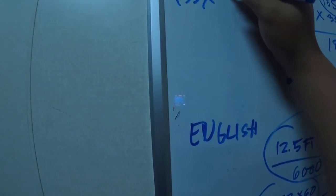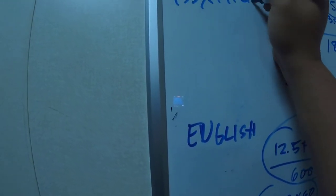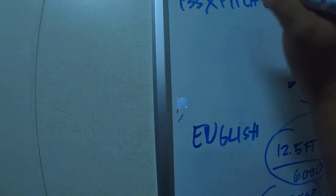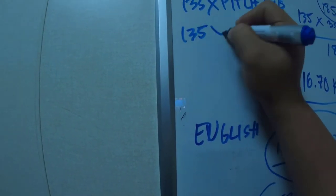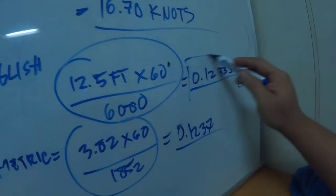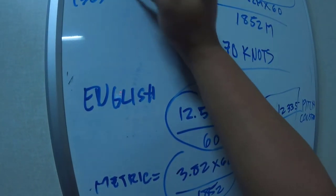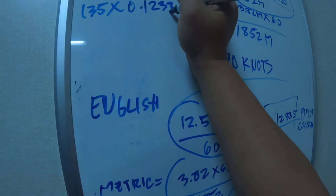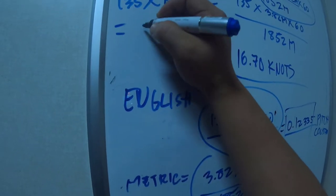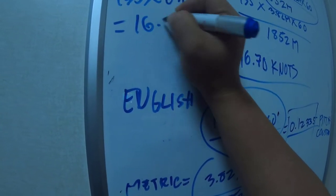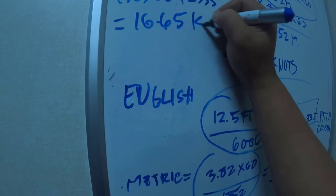So 135 times the pitch constant, times 0.12335, and the answer is 16.65 knots.